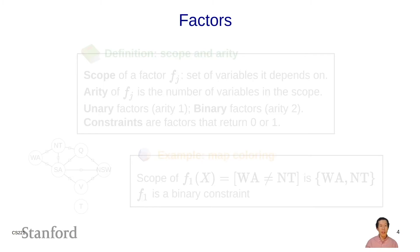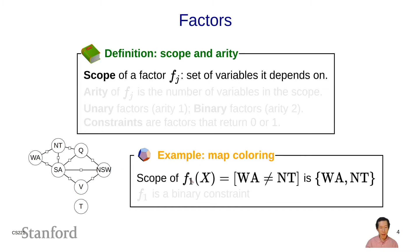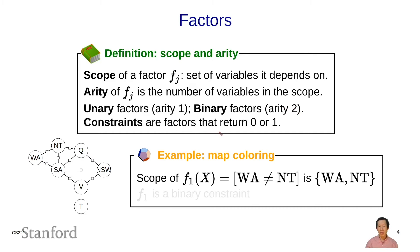A bit of terminology: the scope of a factor is the set of variables it depends on. In the map coloring example, the scope of f1 is simply WA and NT — visually, the set of variables that this factor is touching. The arity of a factor is the number of variables in its scope; in this case the answer is two. Unary factors have arity 1, binary factors have arity 2. Constraints are factors that return 0 or 1 — a special case meaning yes or no. In this context, f1 is a binary constraint.